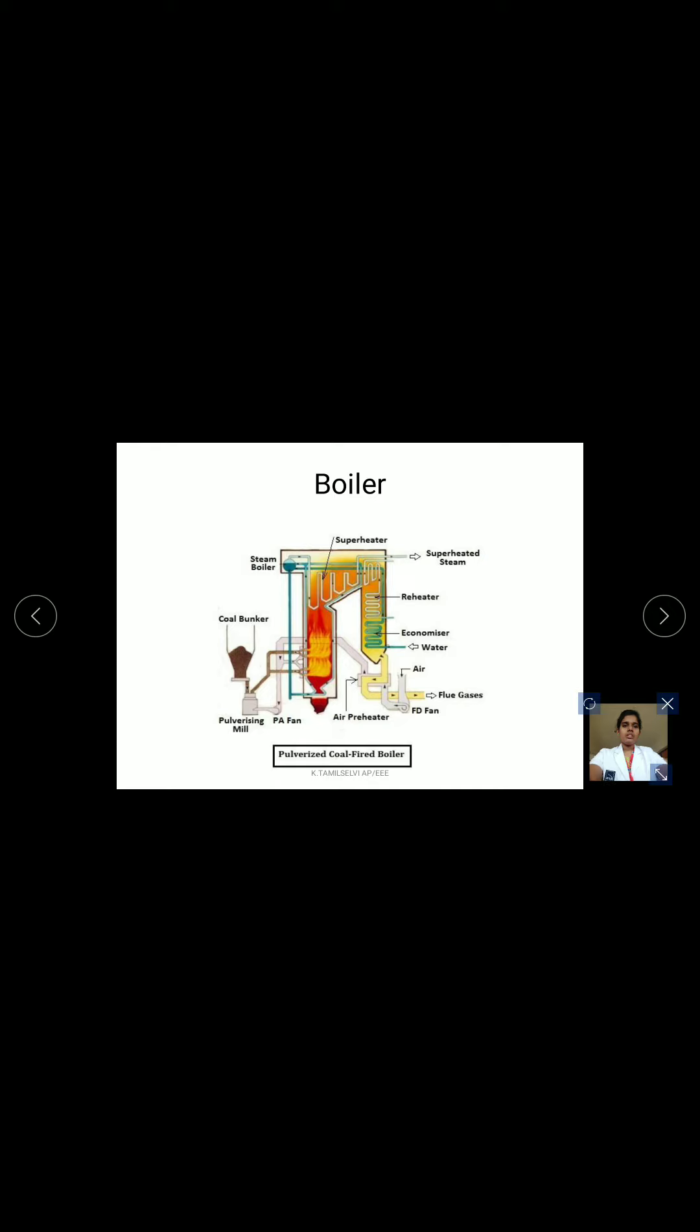This is the general layout of pulverized coal fire boilers. Here a steam boiler in which the steam gets boiled, and then the tubes, the superheated steam from this is fed to the steam turbine. Here you have the reheater, economizers, in order to preheat the air. The pulverized coal is passed and allowed to the lower half of the tubes in order to boil the steam. The fuel gases will be separated through the chimney.